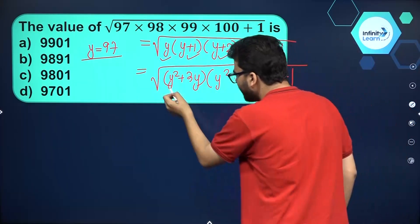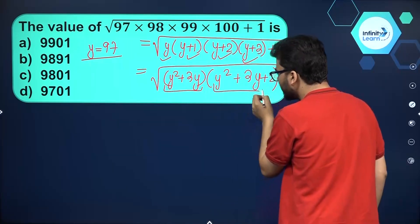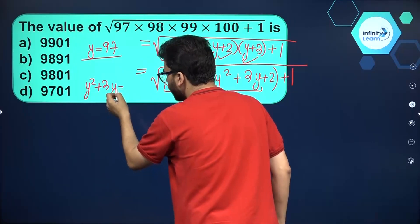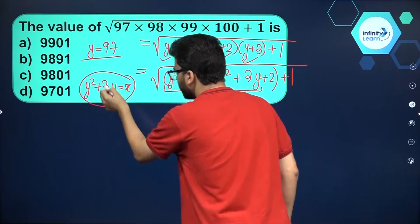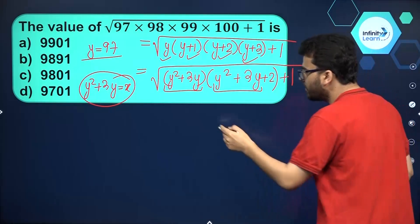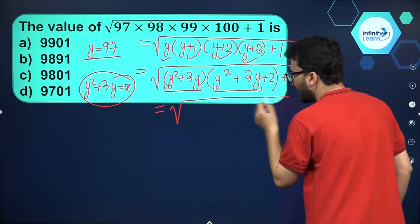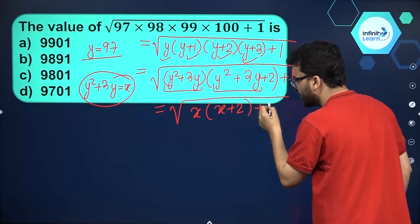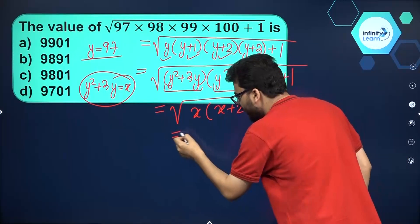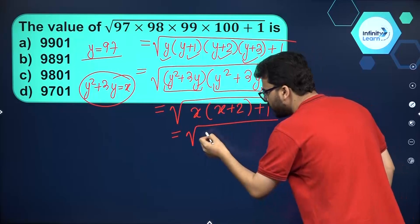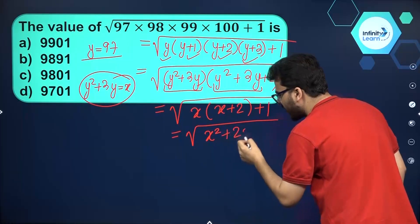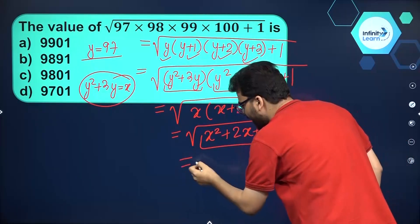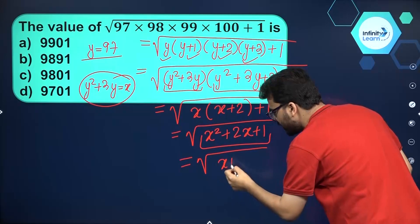Can we do another substitution? Can I take y² + 3y to be equal to x? So the expression becomes √(x × (x+2) + 1), which simplifies to √(x² + 2x + 1).